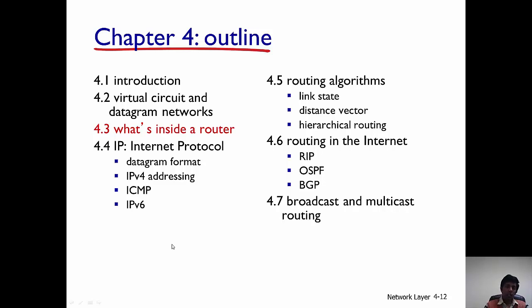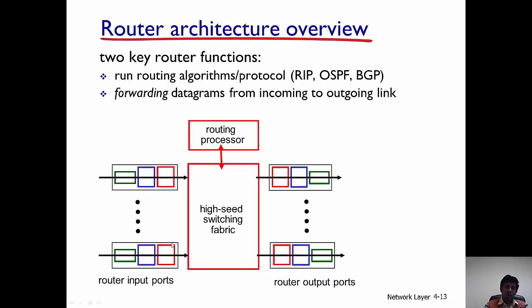Hello everyone. In this lecture I'm going to give you an overview of what's inside a router. We're going to get a sneak peek into how a router works. This picture here shows a schematic of what is inside a router. There are the router's input ports through which datagrams come in, the routing processor, the high-speed switching fabric, and then the datagrams exit the router to the router's output ports.